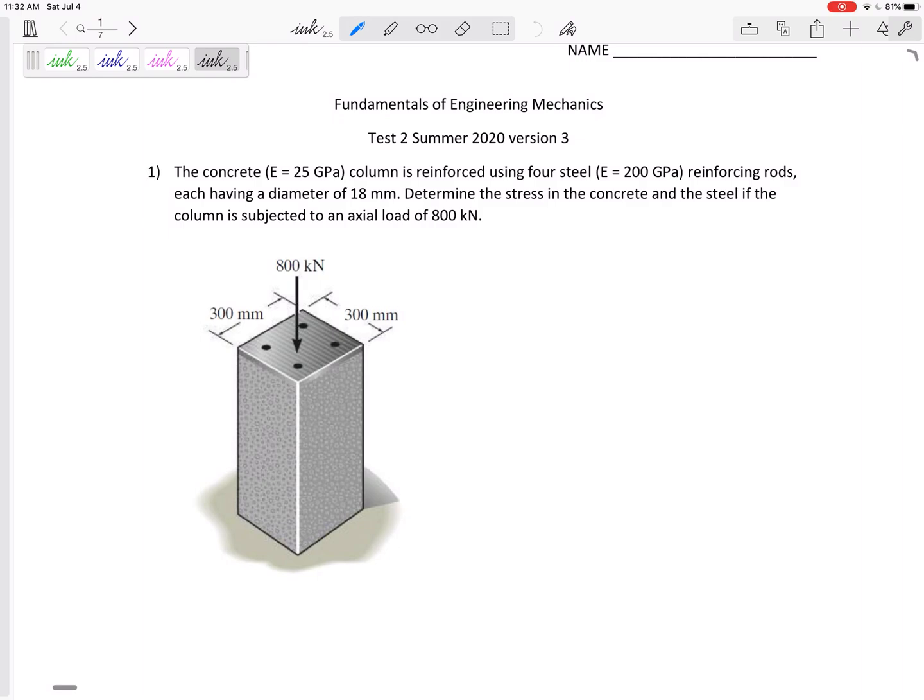We've got a concrete column. It's reinforced with four steel rods. Each of those steel rods has a diameter of 18 millimeters. Determine the stress in the concrete and the stress in the steel if the column is subjected to an axial load of 800 kilonewtons. So you probably don't have to draw the statics or any free body diagram. I think you can kind of understand that the 800 kilonewtons is pushing down, and so if we were to cut it right here, the force in the concrete and the force in the steel counteract that.